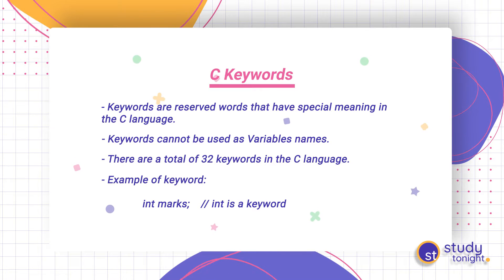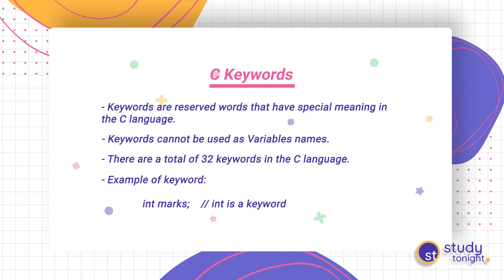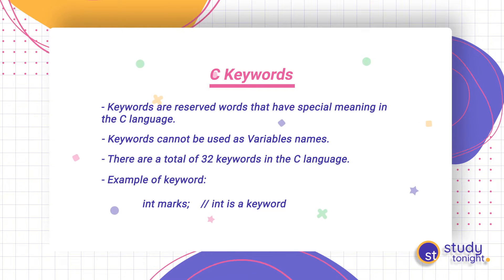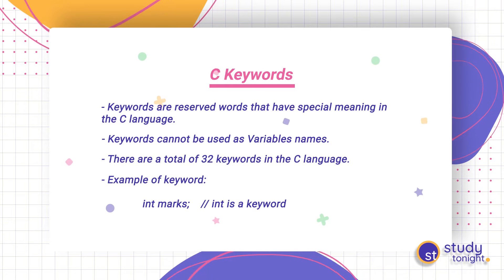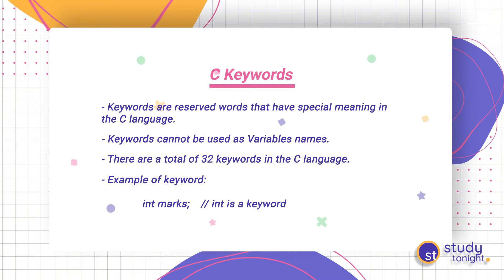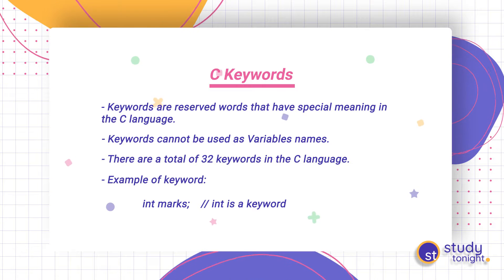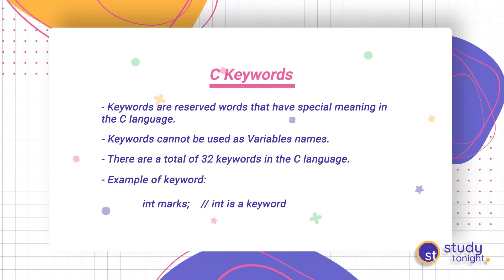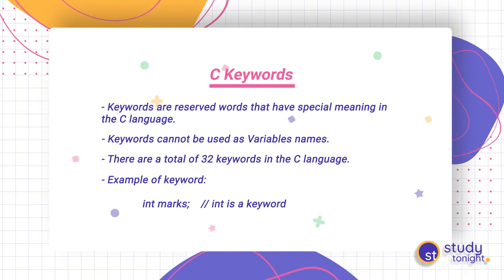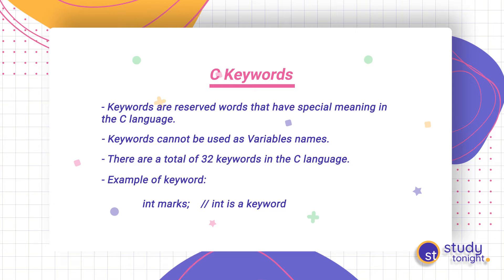There are 32 keywords in the C language and we will see all of them in this video. One example is given here: int marks. The keyword int describes the type of the variable — marks is of integer type. So int here cannot be changed; it cannot be capitalized or written in uppercase, and we cannot change its definition in the C program. That's why it is a reserved word — we use it as it is written wherever we want to use it.